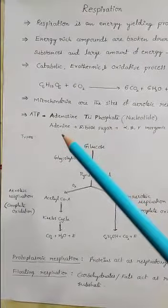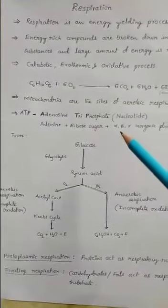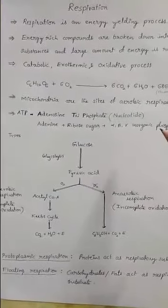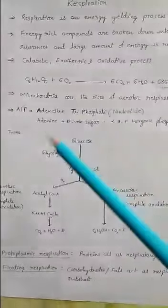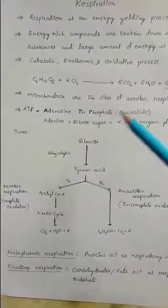In ATP, adenosine is a nitrogen base, ribose sugar, it is one pentose sugar and three inorganic phosphates are present. Collectively, it is called as ATP, adenosine triphosphate. It is one nucleotide.